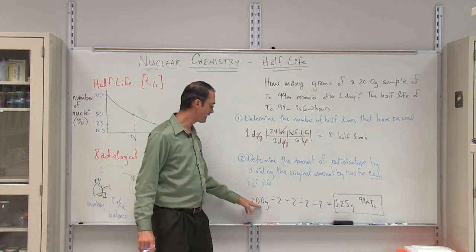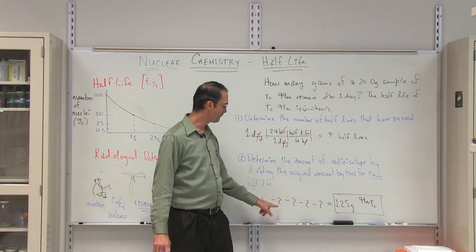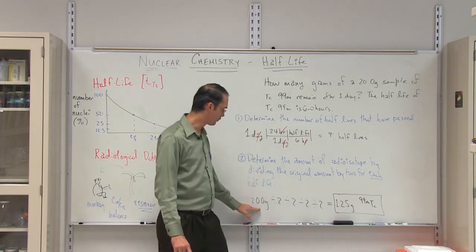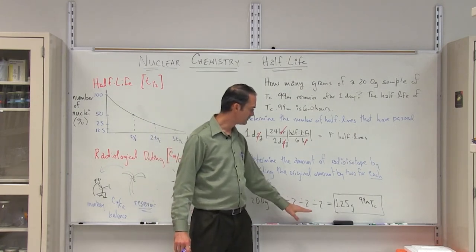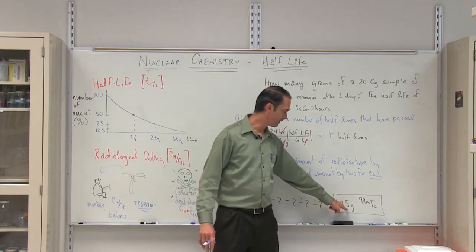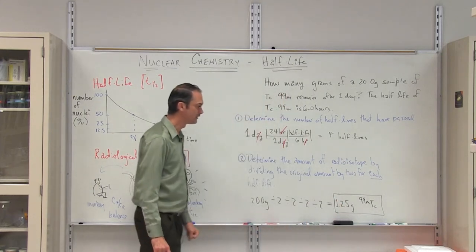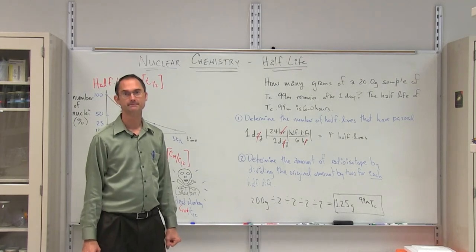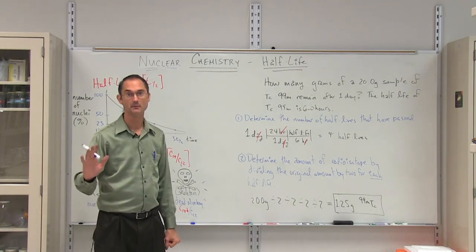So we begin with 20 grams divided by two for each half-life: one, two, three, and four times. So we have 20, then 10, then five, then two and a half, and finally 1.25 grams of metastable technetium-99 remaining. That's it. Bye-bye.